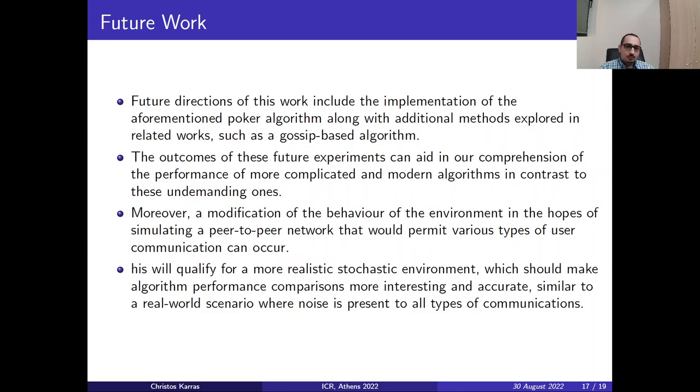Future directions of this work include the implementation of the aforementioned algorithms with additional methods explored in related work, such as the gossip-based algorithm and more aggressive algorithms. While the outcomes of these future experiments can aid in our comprehension of the performance of more complicated and modern algorithmic choices in contrast to these more fundamental ones. Moreover we can create a modification of the behavior of the environment. Hoping that the peer-to-peer network would permit various types of user communication within. This will qualify for a more realistic stochastic environment, which should make algorithmic performance comparisons more interesting and accurate. Similar to a real-world scenario where noise is present across all types of communications.